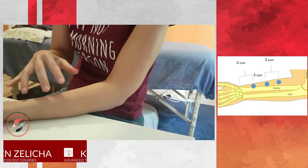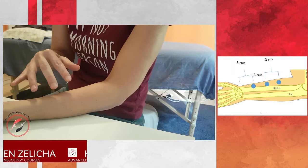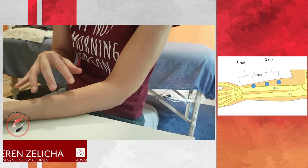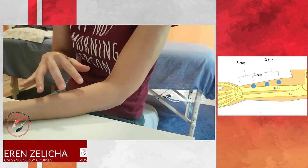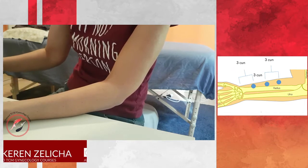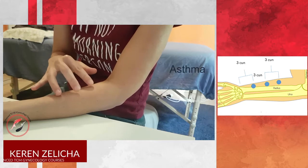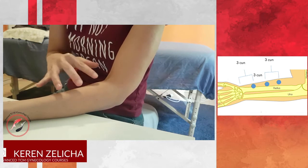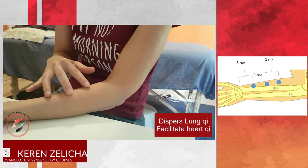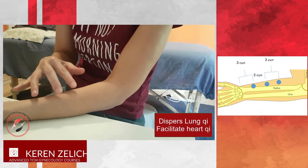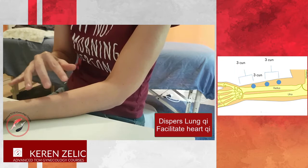The points affect the heart, the lung, and the kidneys. But mostly I use it for lung issues. It can be cough, it can be asthma. Since the points, the function of the points are to disperse lung qi and to also facilitate and move the heart, the qi of the heart.